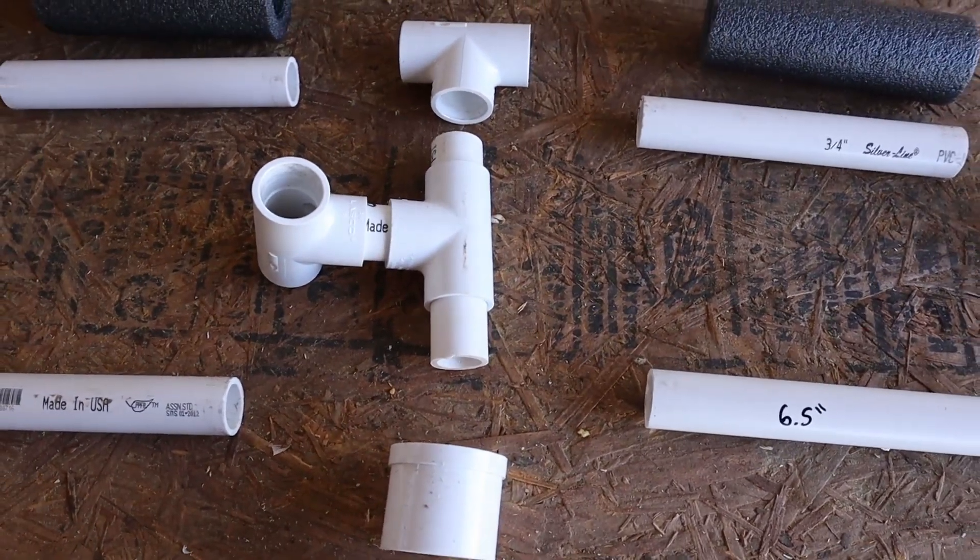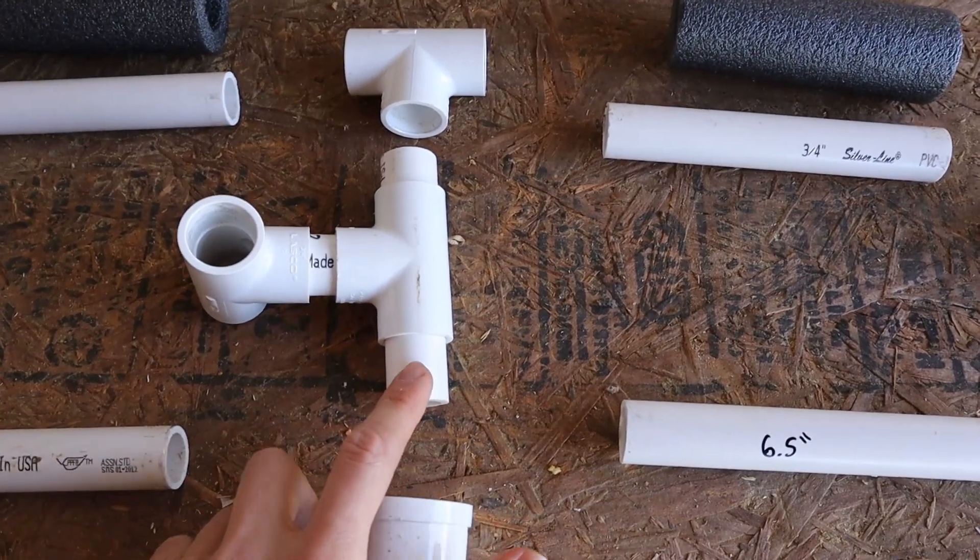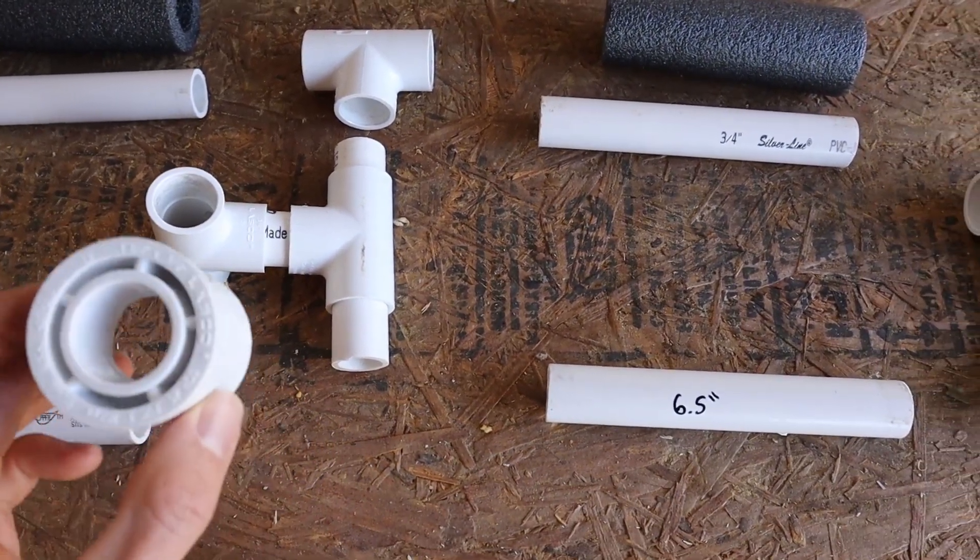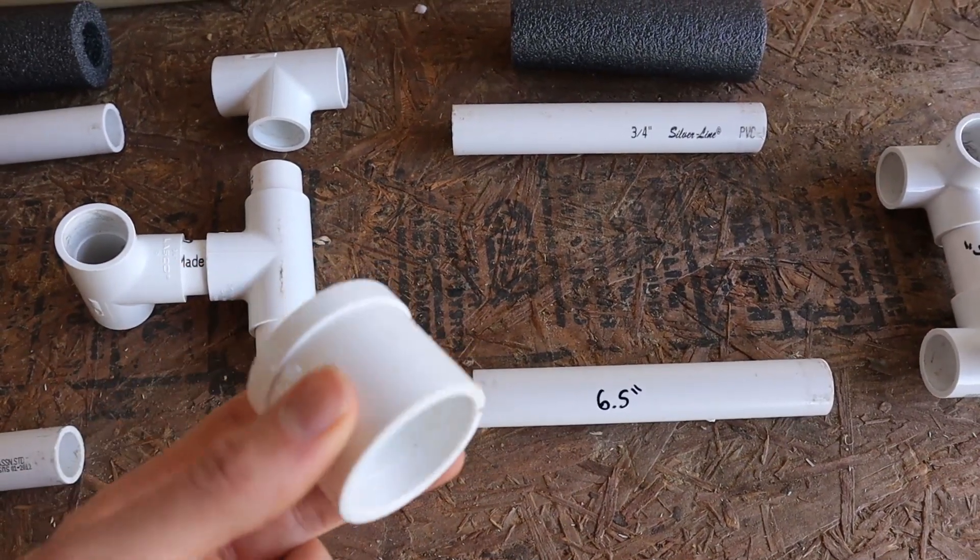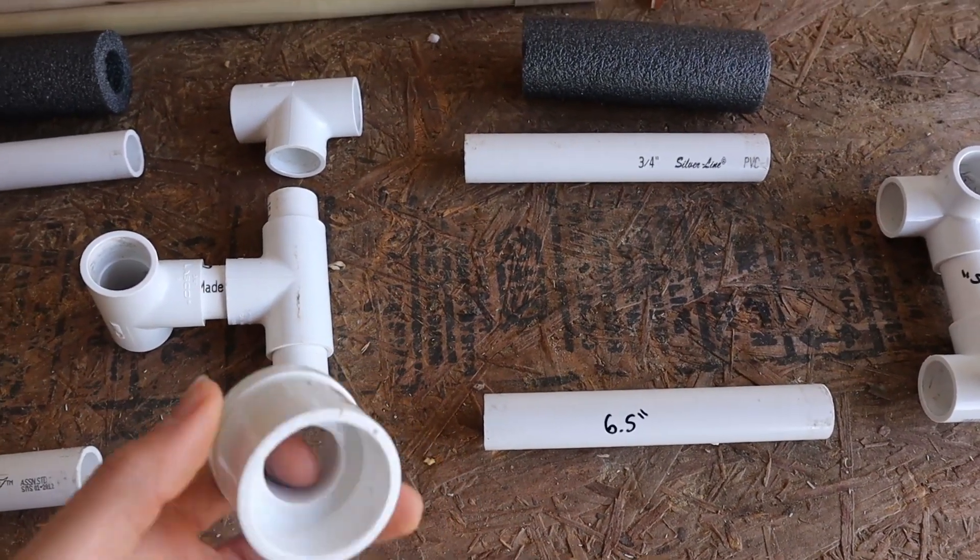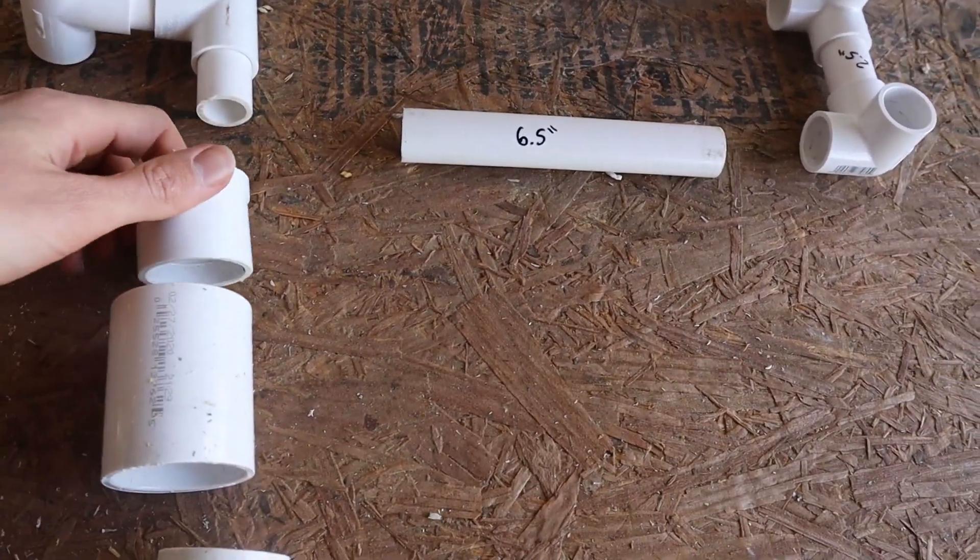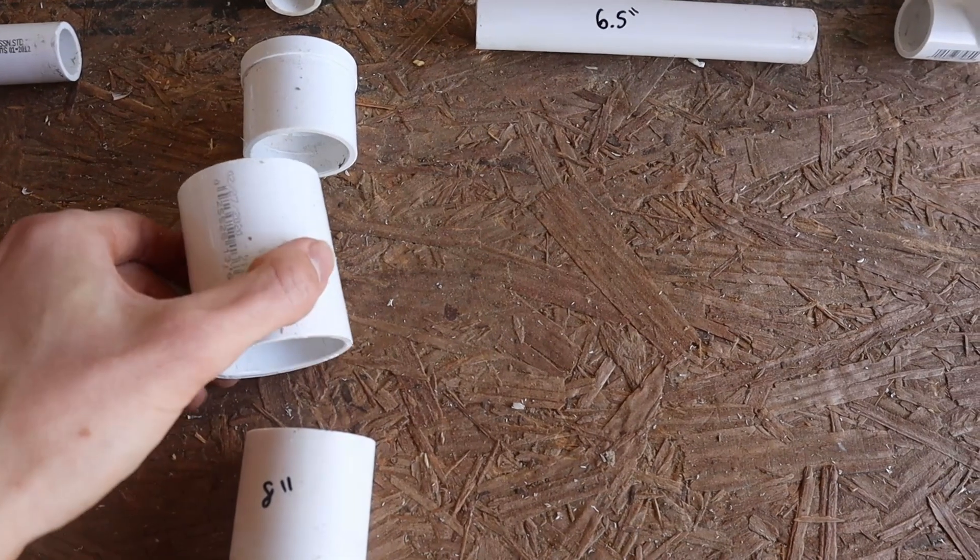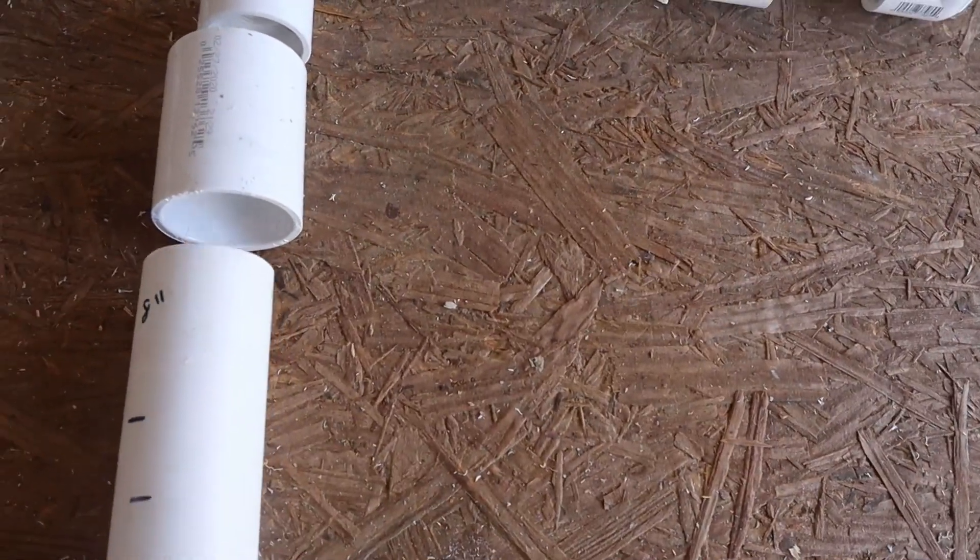And then to convert to our one and a quarter inch we're taking the end of this three quarter inch and going into a bushing. You can see here so it goes three quarter inch to one and a quarter inch bushing. And then that will fit into this one and a quarter inch coupling which will then fit into the bottom of this thing.